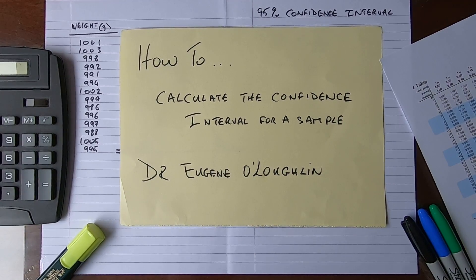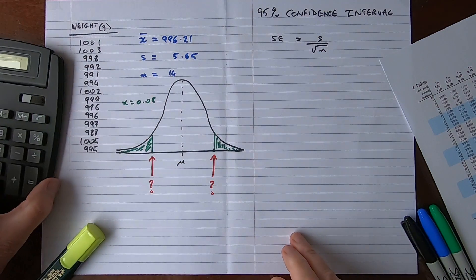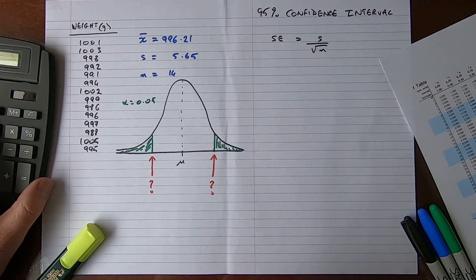Hi everybody, this is Eugene O'Loughlin and welcome to my series of short how-to videos. In this video we're going to learn how to calculate the confidence interval for a sample by hand. First, let's take a look at the data that we're going to use in this example.